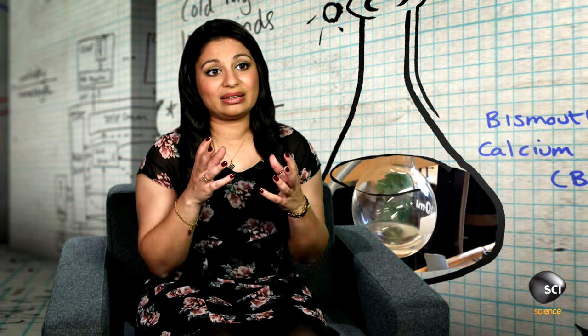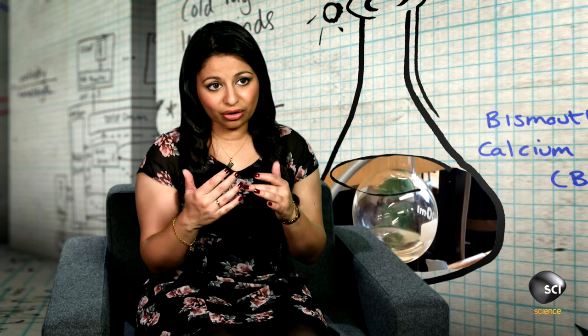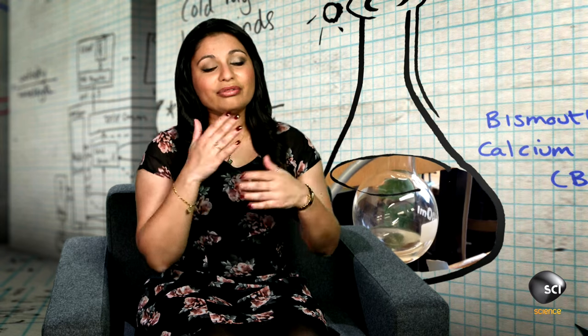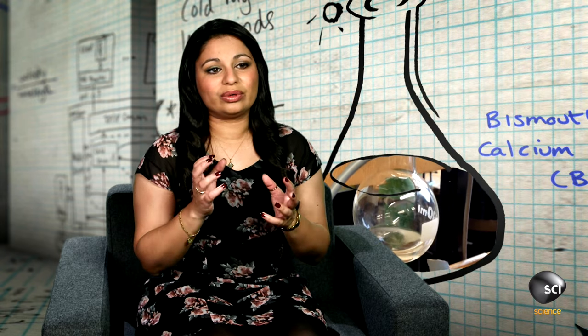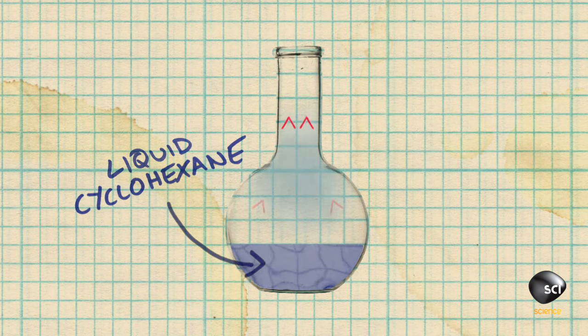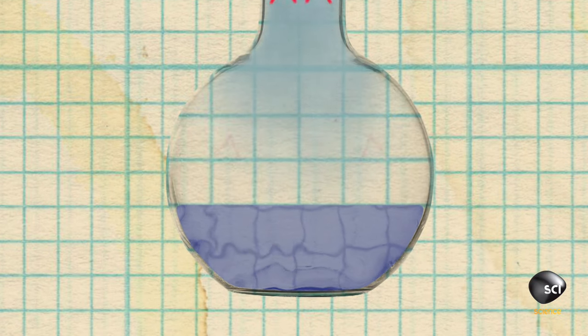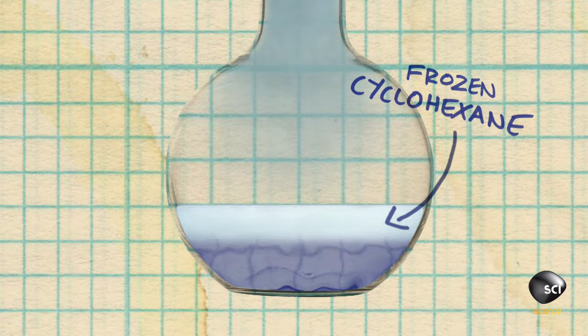Now because that contains cyclohexane molecules that have evaporated off the liquid layer, by removing that we're changing what we call the equilibrium. The system wants to restore this equilibrium and that means that you get more and more cyclohexane molecules evaporating out of solution. But it takes energy to do this and as a result the remaining cyclohexane drops in temperature and freezes.